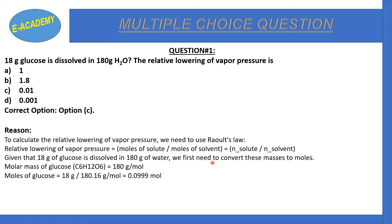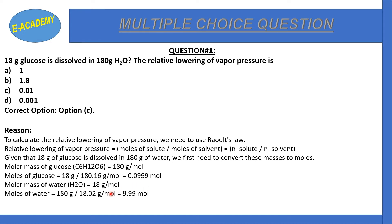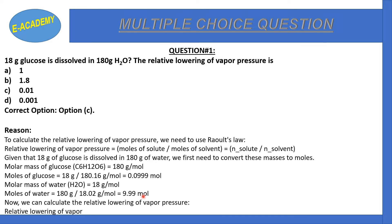Moles of glucose = 18 grams divided by 180 grams per mole = 0.1 moles. Moles of water = 180 grams divided by 18 grams per mole = 10 moles. Relative lowering of vapor pressure = moles of solute divided by moles of solvent = 0.1 divided by 10 = 0.01. Answer is 0.01.